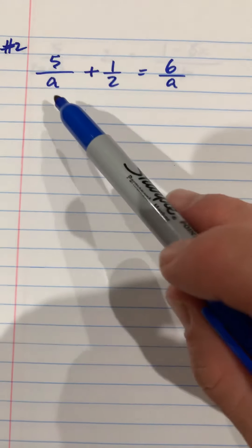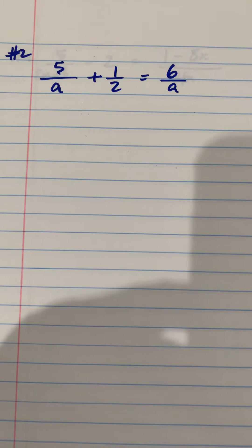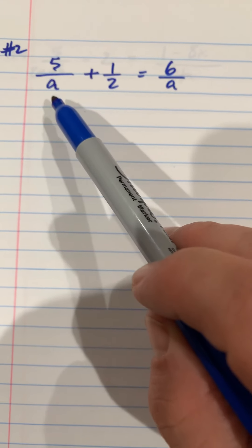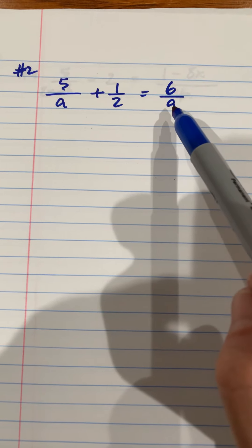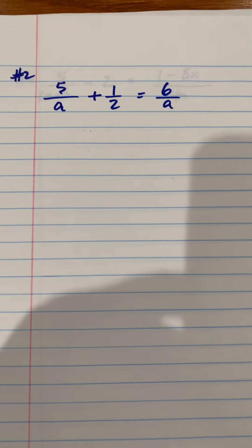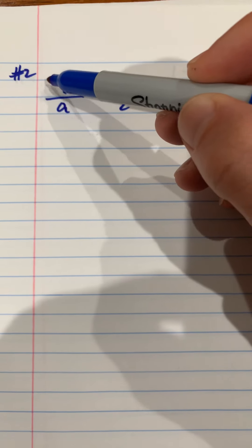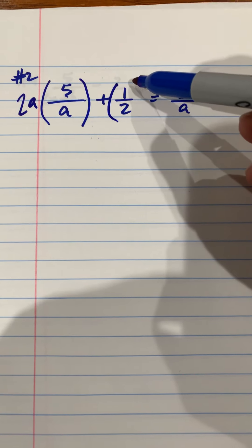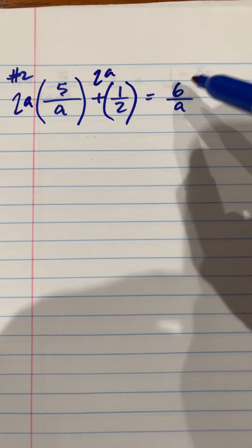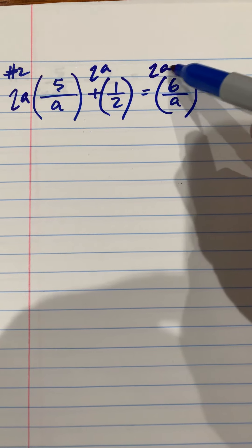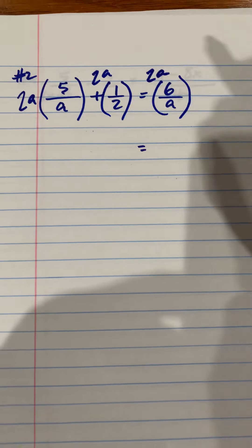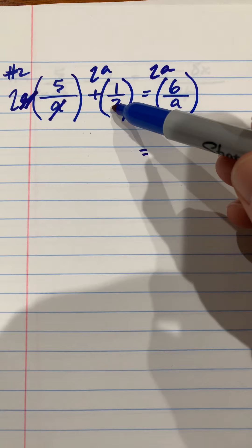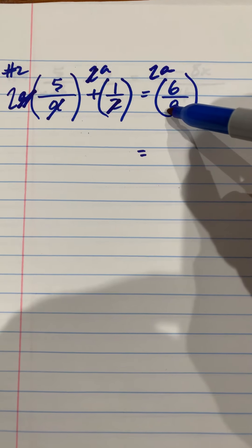So what would the least common denominator be here? It's going to be 2a. I can multiply this by 2 to give me 2a, I can multiply this by a to give me 2a, and I can multiply this by 2 to give me 2a. So the least common denominator is 2a. If I multiply every term by 2a, it effectively clears the fractions because these cancel, these cancel, and these cancel.